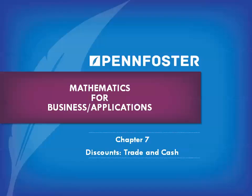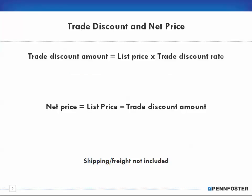If you still don't understand, you can telephone and speak with an instructor or contact us via email. Now, trade discounts and net price: the trade discount amount is equal to the list price times the trade discount rate. For example, if the list price is $100 and the trade discount rate is 20%, that equals a trade discount amount of $20.